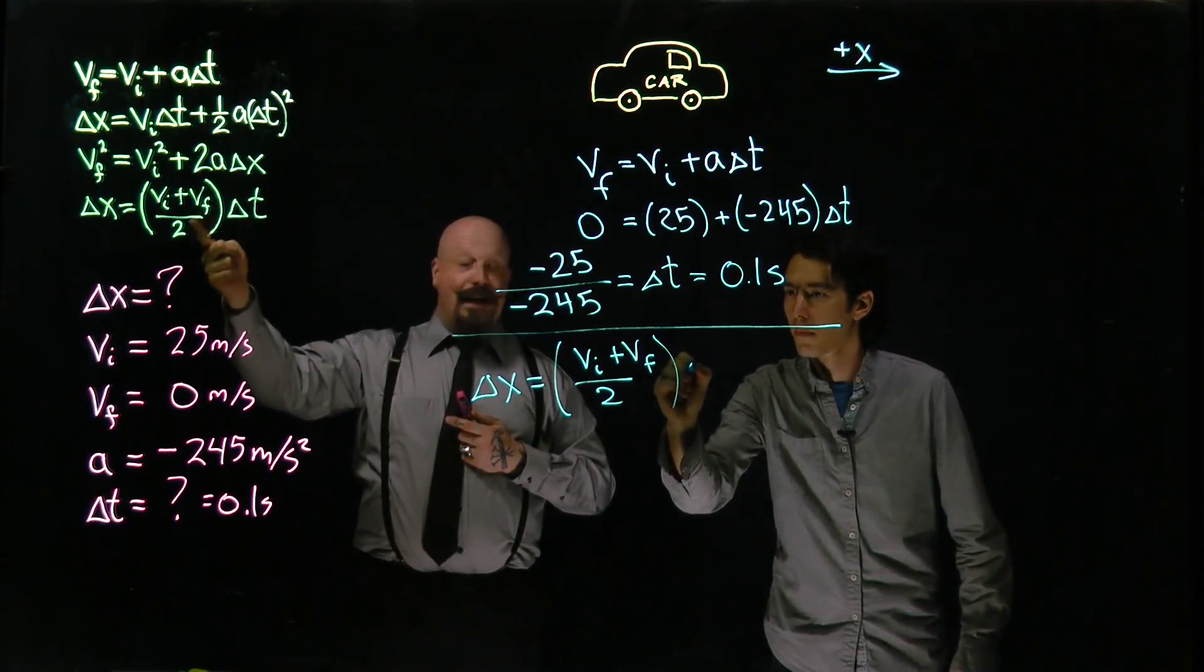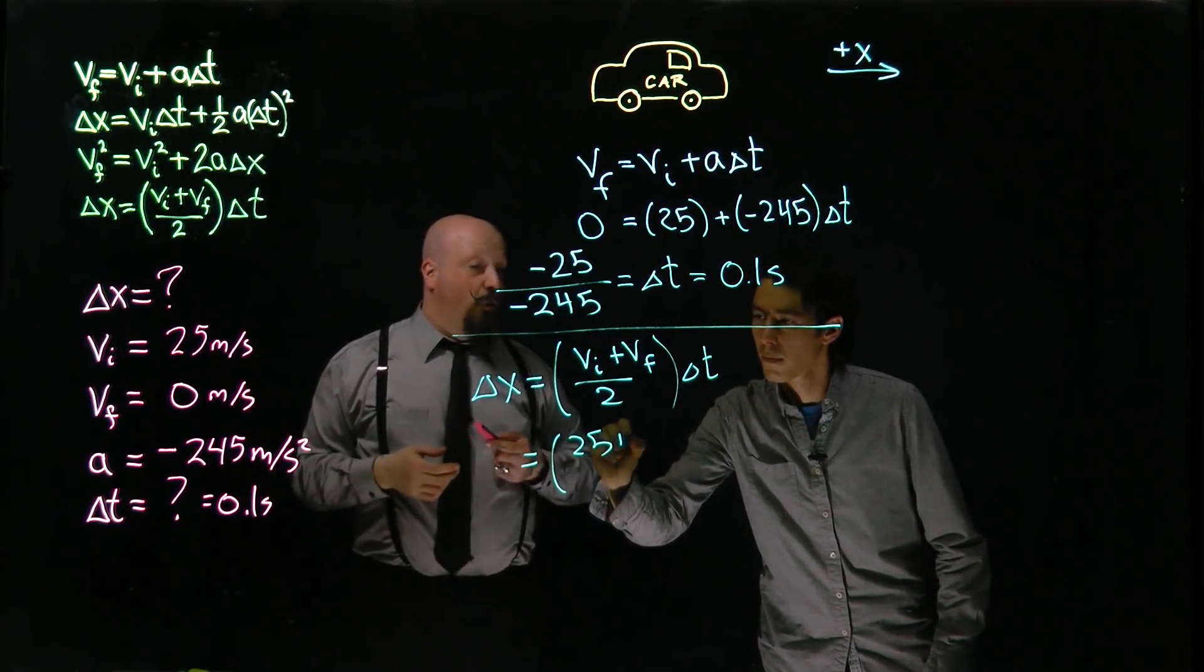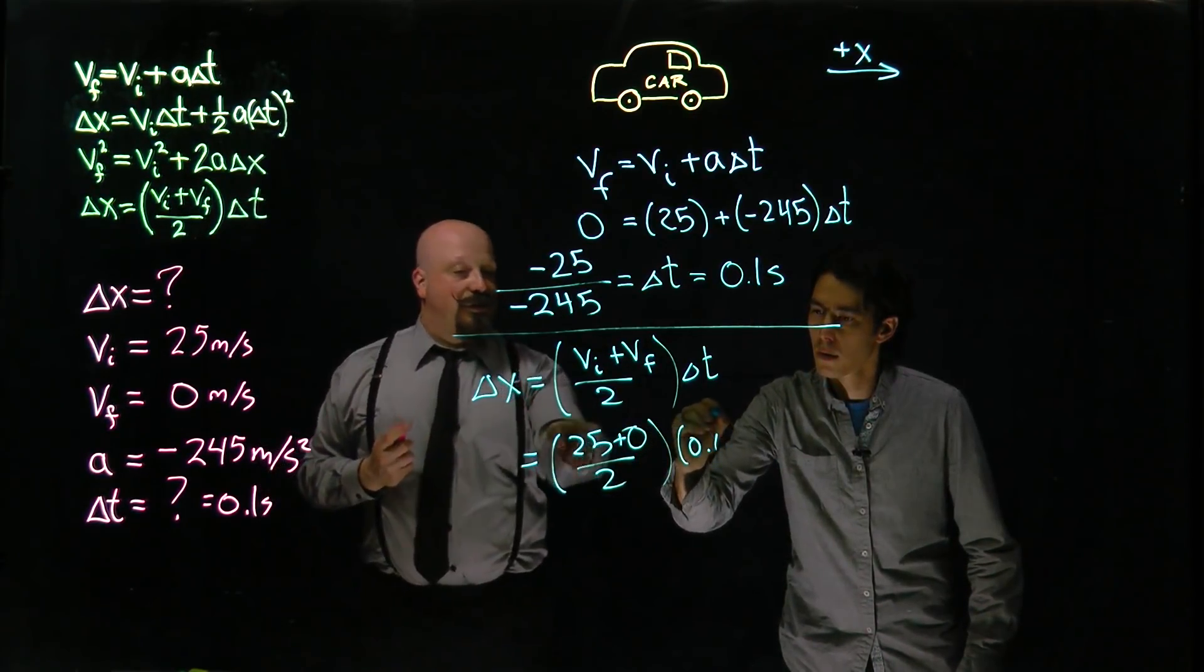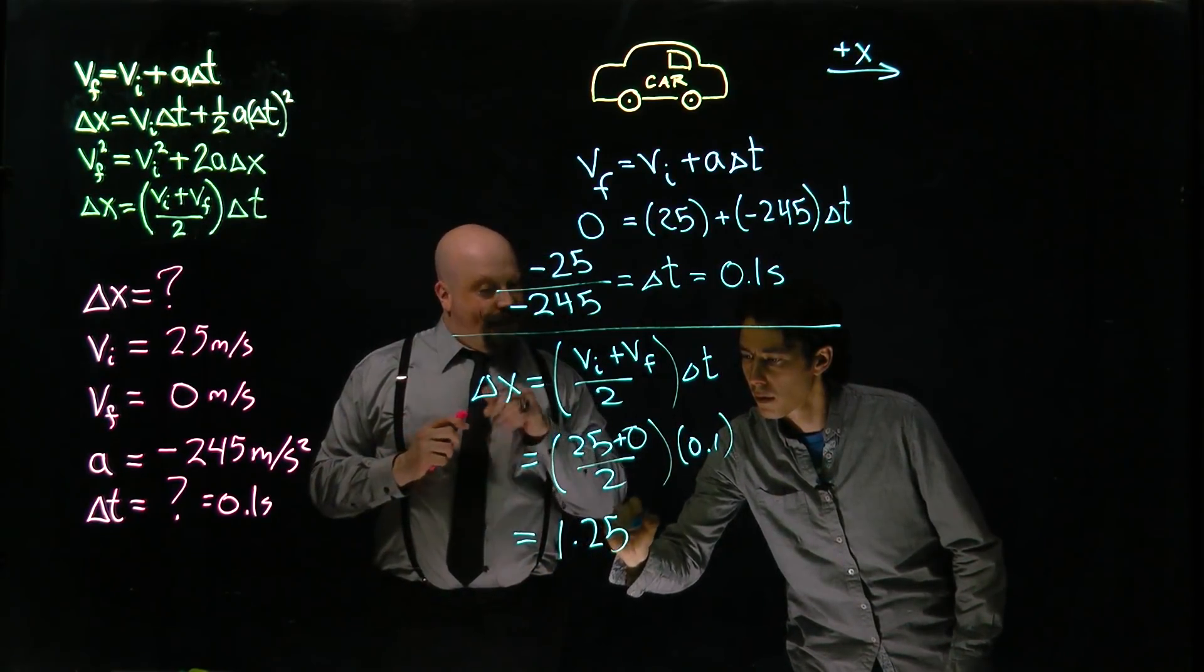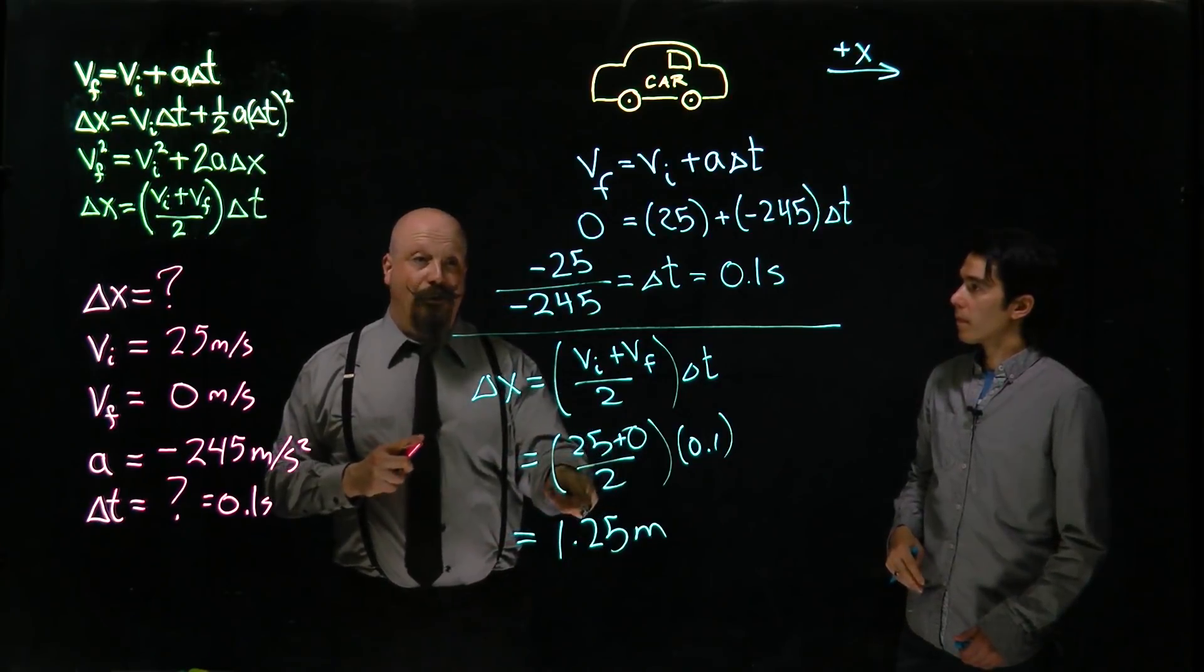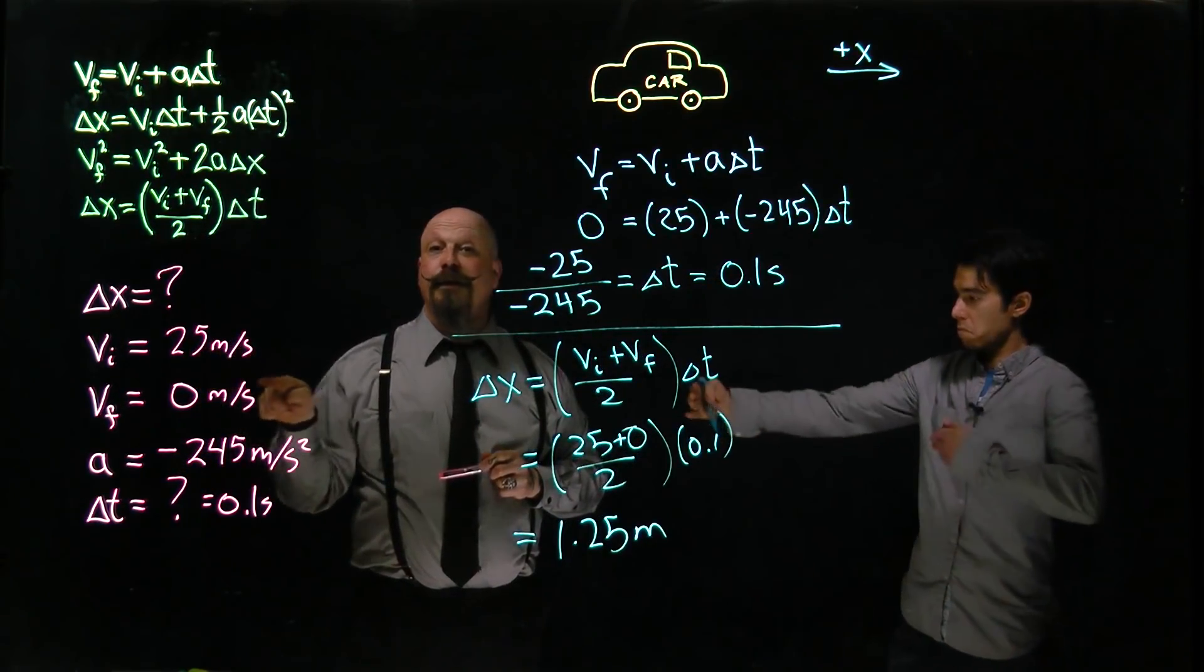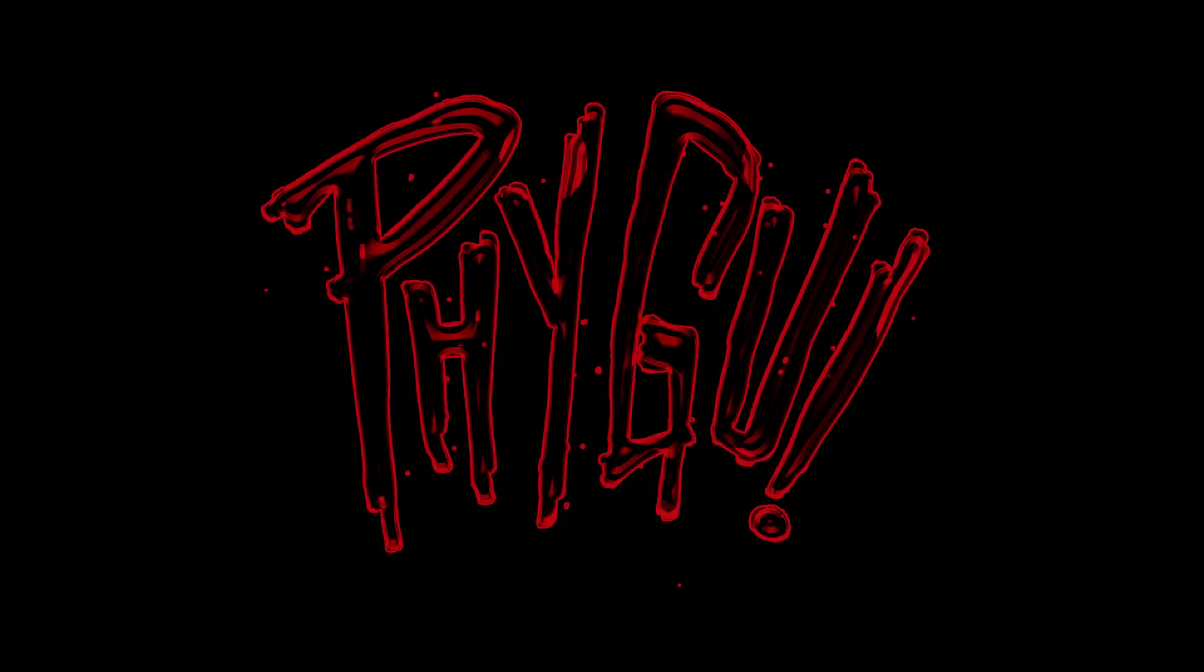Our initial velocity again is 25 meters per second. The final is 0, divided by 2, multiplied by that 0.1 seconds. Now that basically gives us 12 and a half times 0.1, or 1.25 meters. And that's the total distance that you travel during this time to slow from 25 meters per second down to 0. That's about here. That's all. Thank you.